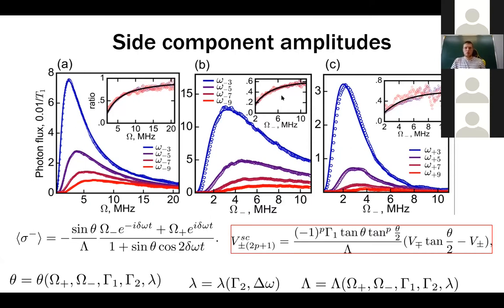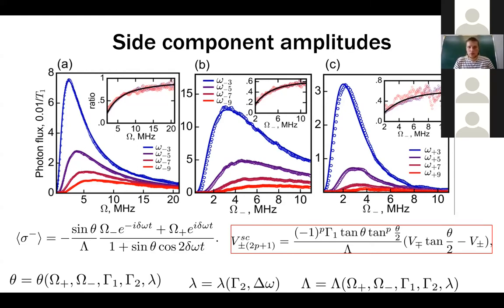Regarding the master equation: when it is properly derived, it does not explicitly contain the quantum reservoir. The qubit density matrix evolution is described, and the effect of the reservoir is already represented by the constants gamma_1 and gamma_2 — this is the standard Lindblad-type approach. We can also derive exact expressions for the side component amplitudes, and they correspond well to experiment.